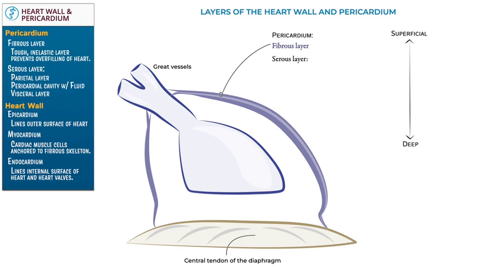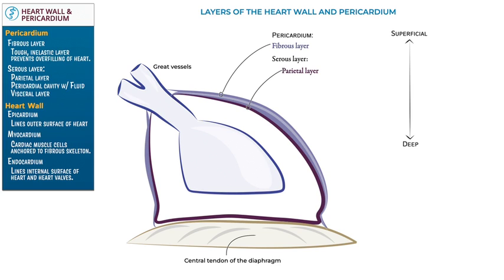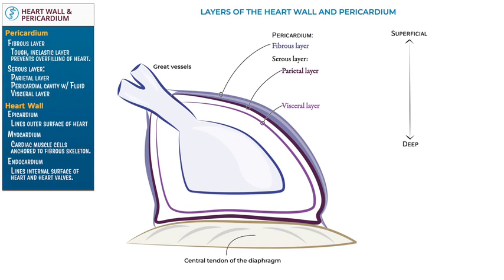Draw the serous pericardium, which is itself a double-walled sac with space for fluid between the sub-layers. Show that as the outer parietal layer approaches the great vessels, it folds under itself to form the deep visceral layer. Folding in on itself, the serous layer creates a space for fluid — the pericardial cavity filled with pericardial fluid. This thin layer of fluid reduces friction between the layers of the serous pericardium and allows the heart to move.